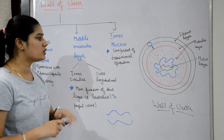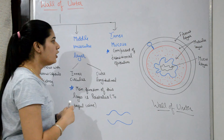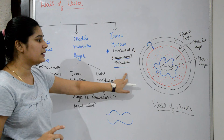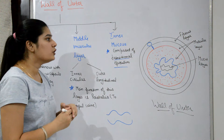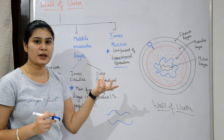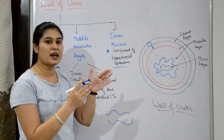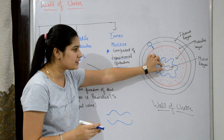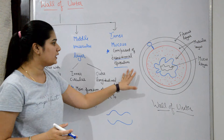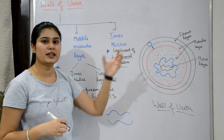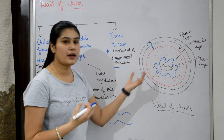The inner mucosal layer lines the ureter wall and is made of transitional epithelium. When urine pressure or volume is high, this transitional epithelium allows the lumen of the ureter to stretch, preventing rupture or injury to the wall due to high pressure or high volume of urine.